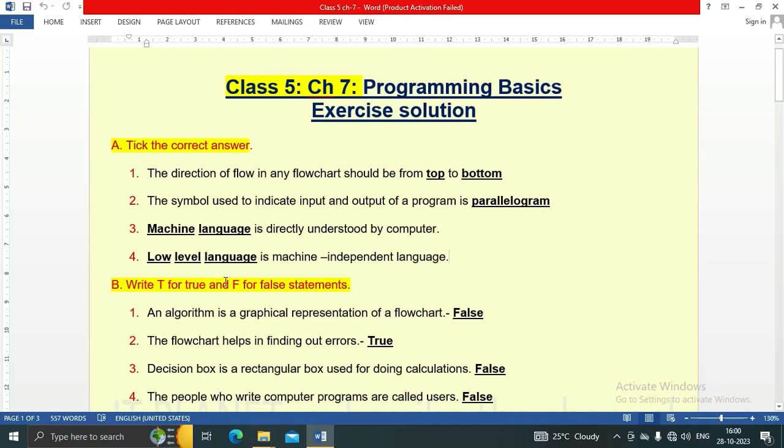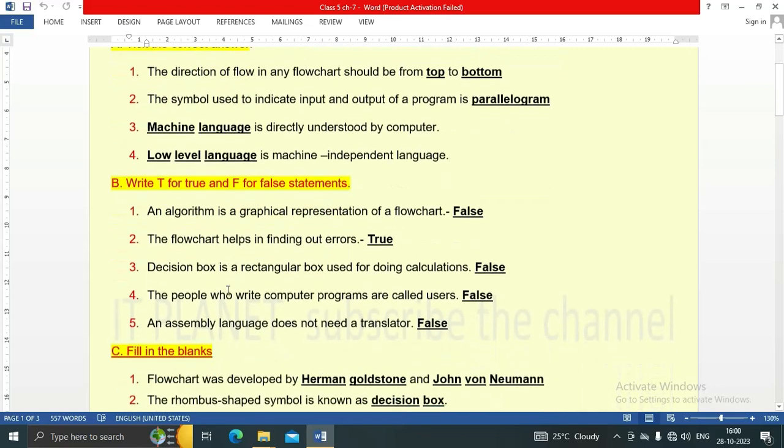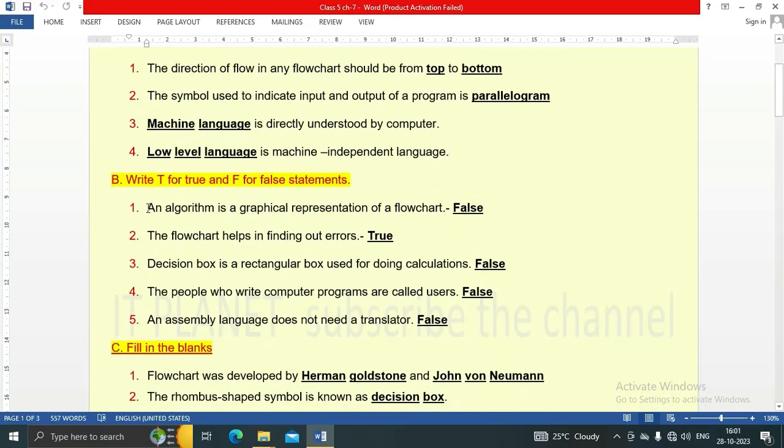Low level language is machine independent language. Question B: write T for true and F for false statements. Let's see all the statements one by one. First statement: an algorithm is a graphical representation of a flowchart. This statement is false. An algorithm is not graphical representation of a flowchart, but vice versa. Flowchart is a graphical representation of an algorithm. The flowchart helps in finding out errors. This statement is true.